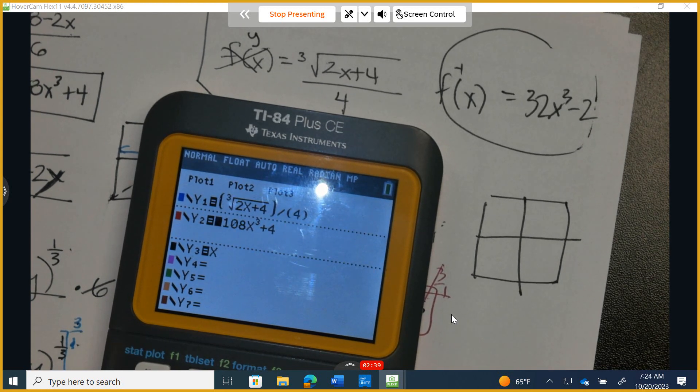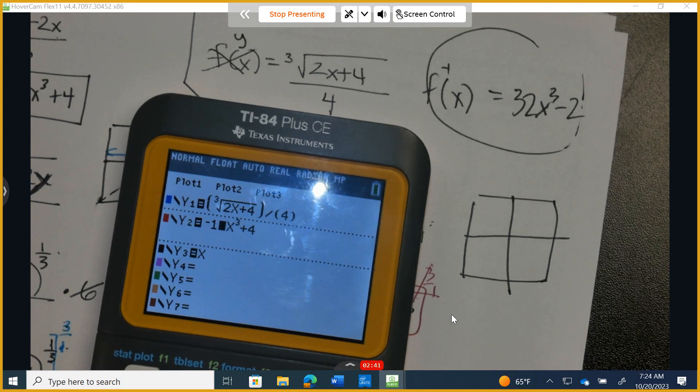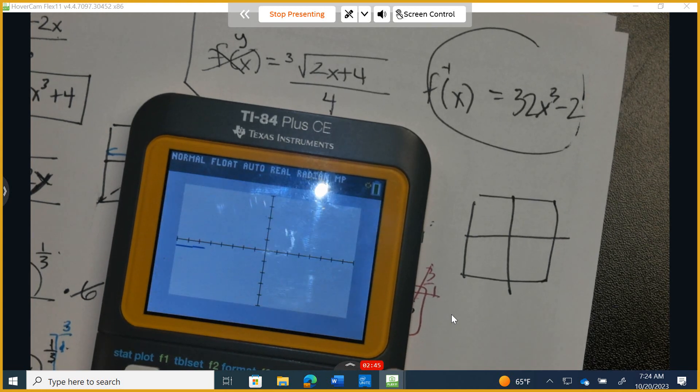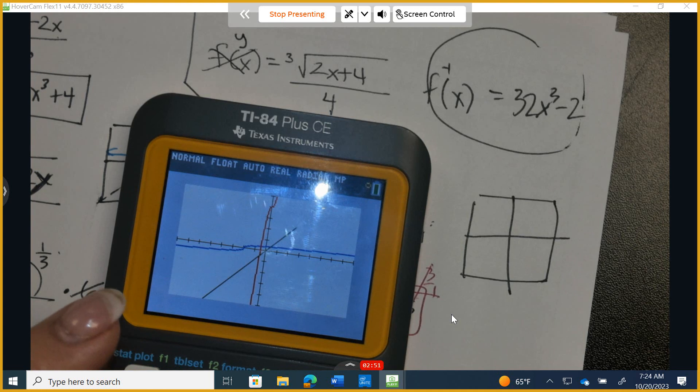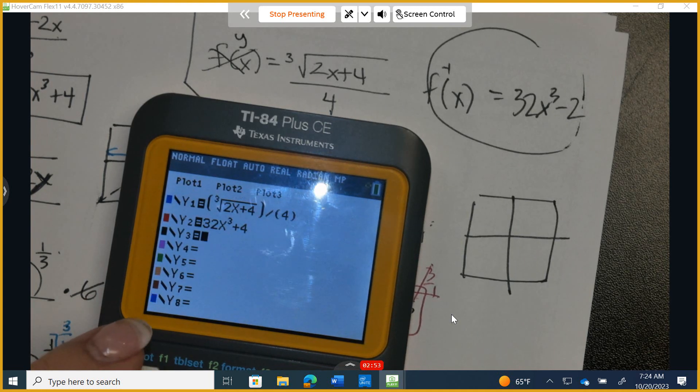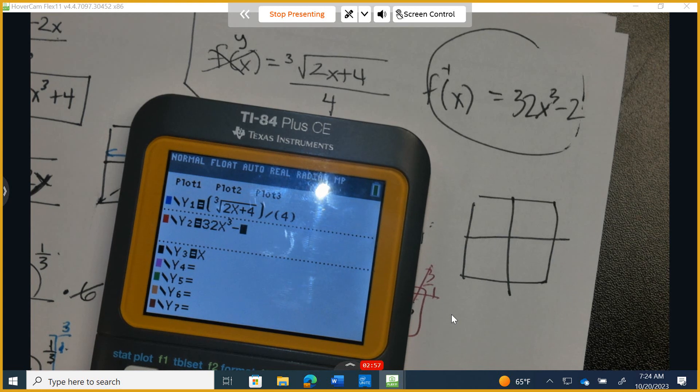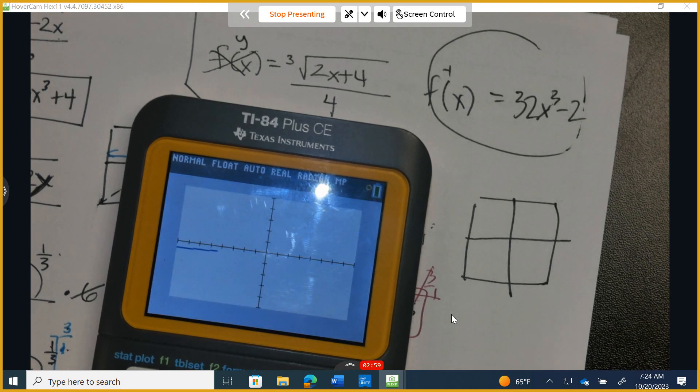And on the bottom I have 32 x cubed. Oh, I didn't finish that. I have 32. Come back here. There we go. 32 x cubed and it is minus 2. Okay. So here's what we have. Here's our first function. Here's our second.